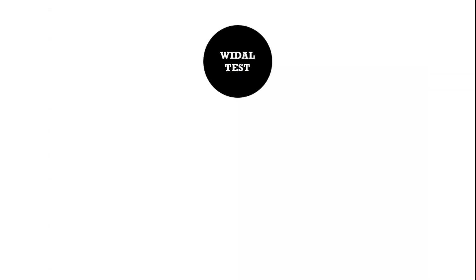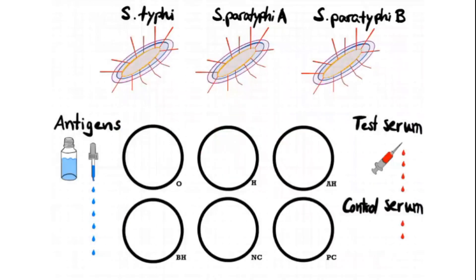So the Widal test starts with a rapid qualitative slide test. The rapid qualitative slide test shows us to which antigen our body already produced some antibodies — that's why we say qualitative, it's just a statement about antibody presence. We use a test card or glass slide which has six circles labeled with O, H, AH and BH for the various antigens, and as a reference point we use the negative and positive controls, NC and PC.